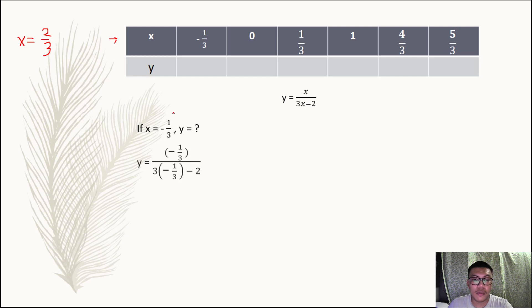We'll replace all values of x, so we have negative one third all over three times negative one third minus two. So we get negative one third all over negative one minus two.